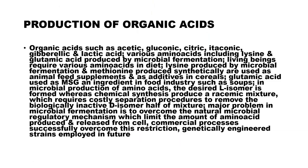First of all, what are organic acids? We know examples already: acetic acid, gluconic acid, citric acid, itaconic acid, gibberellic acid, and lactic acid. Can anybody tell me what is the natural source of citric acid? Very good — lemon, oranges, citrus fruits. Exactly, citrus fruits are the natural source of citric acid.